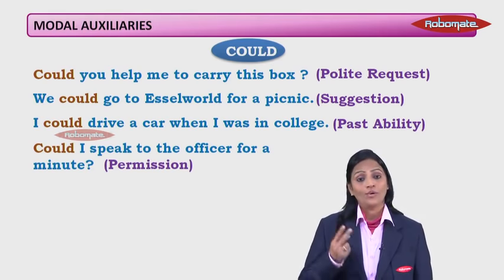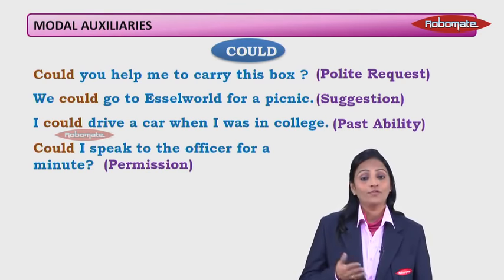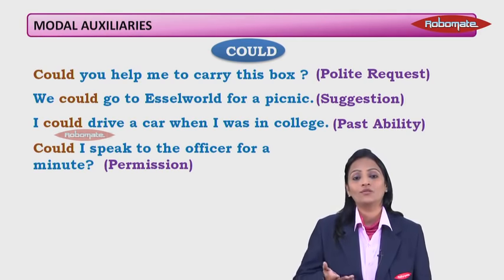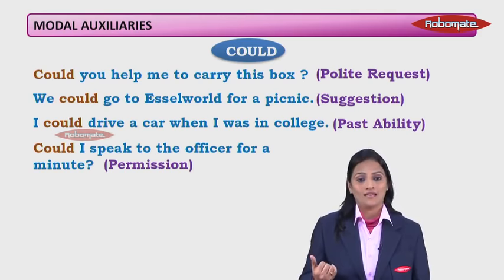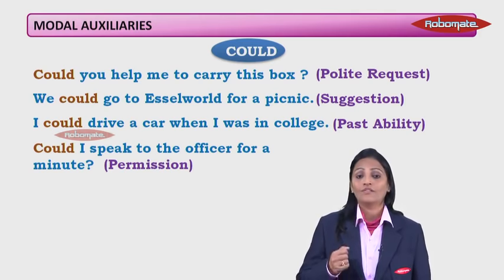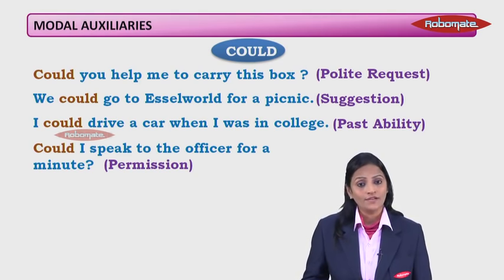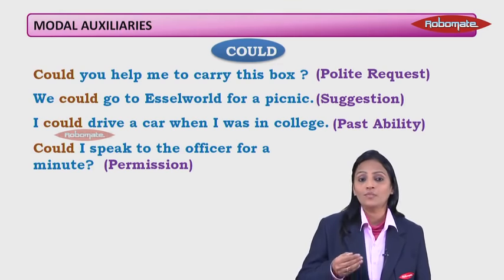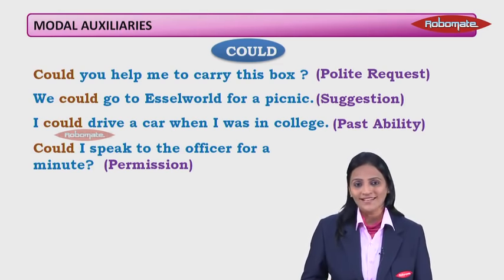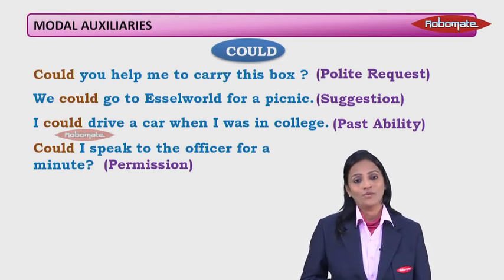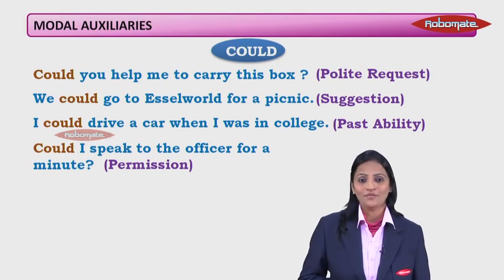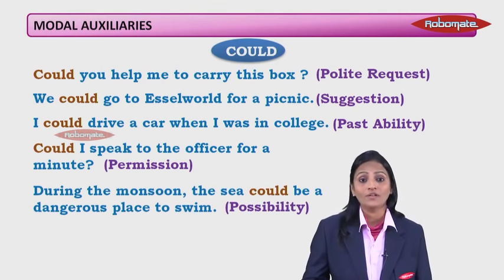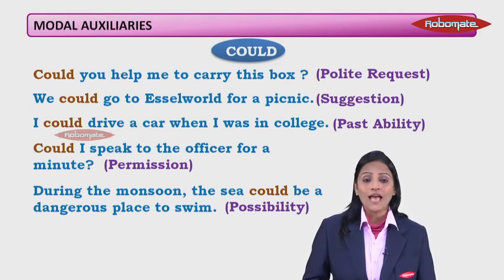So 'can' has two functions: ability and permission. 'Could' has many functions: polite request, suggestion, past ability, permission. Just the word 'could' alone won't tell you the function — you have to read the whole sentence and understand the meaning. During the monsoon, the sea could be a dangerous place — here 'could' stands for possibility. So you must learn the list of modal auxiliaries and the functions of each.